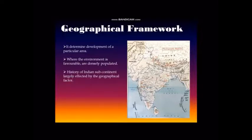The Himalayan mountain range in the north acted as a barrier between India and Central Asia. The passes in the mountains were routes of contact. In the south, the Deccan plateau or the southern peninsula was divided into smaller regions by mountains, river valleys and plateaus.